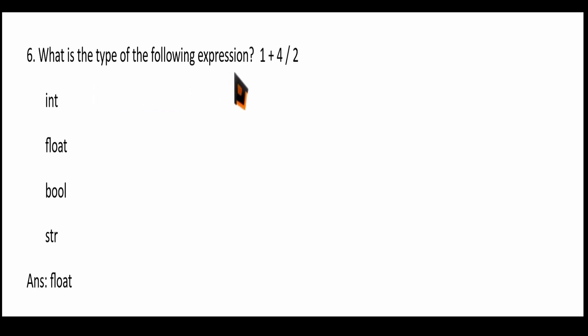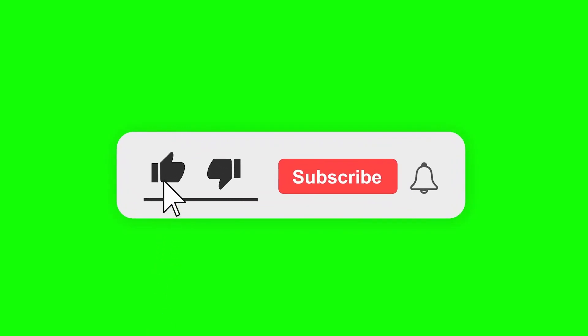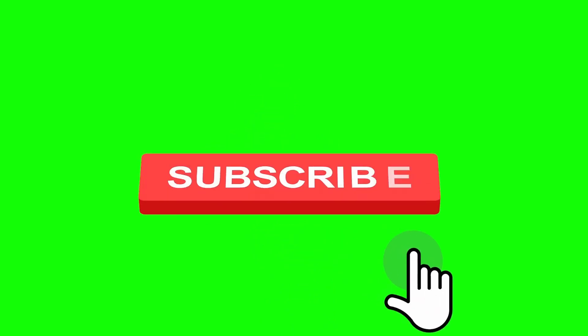The next question: what is the type of the following expression — 1 + 4/2? The 1 is an integer. When you compute 4 divided by 2, the result is a float. When you add an integer with a float, the result will be a float. So they are not asking the value, only the type of the expression. The result type will be float.